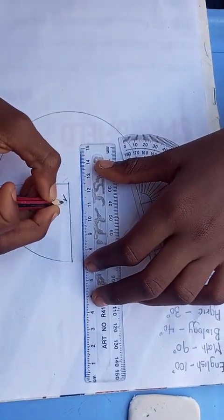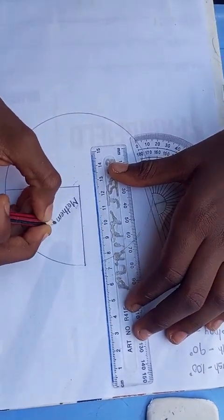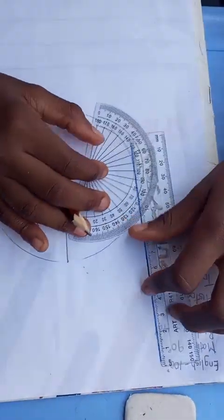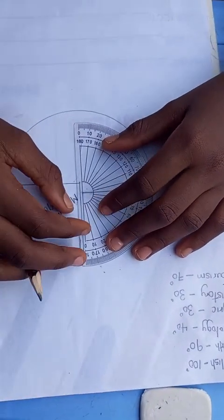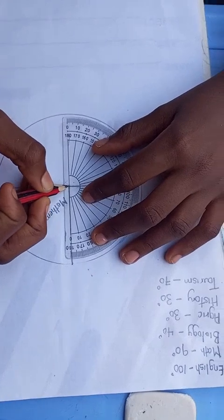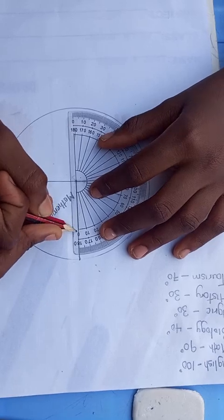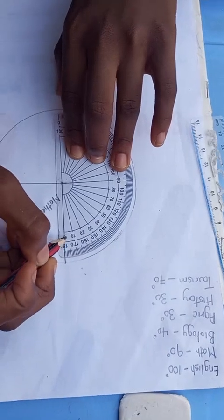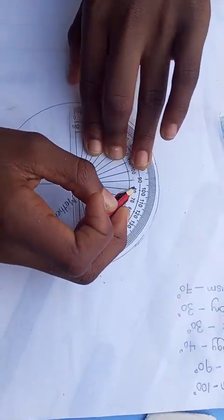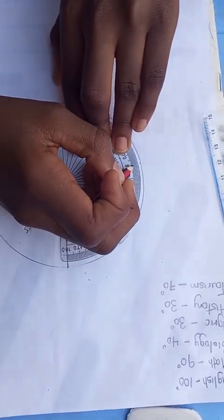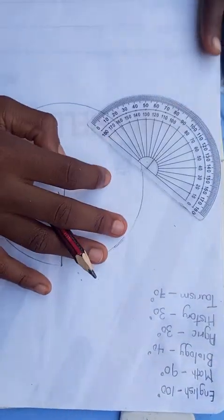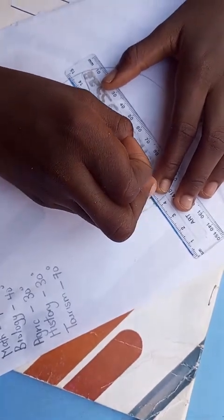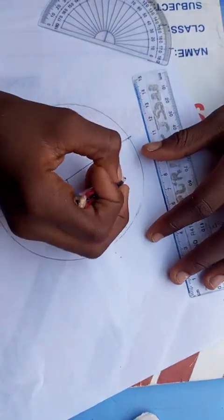So this is mathematics 90 degrees. We go for English which is 100 degrees. This line at this point and this line at the angle we just found. This is 100, 10, 20, 30, 40, 50, 60, 70, 80, 90, and this is 100. Mark, use a ruler to determine the angle. So this is English 100 degrees.